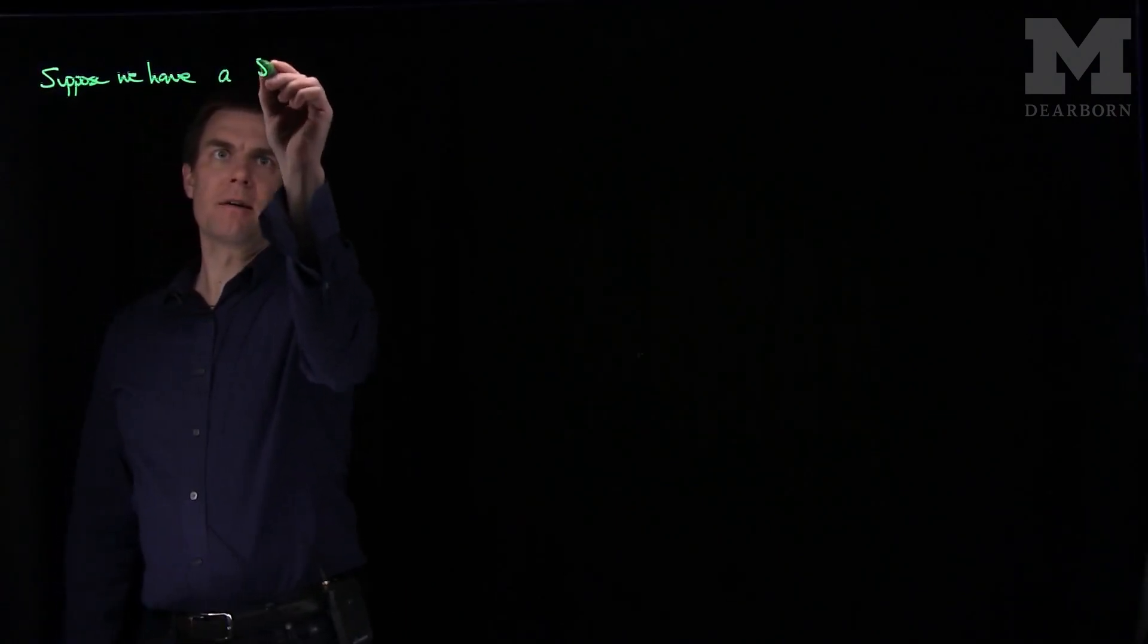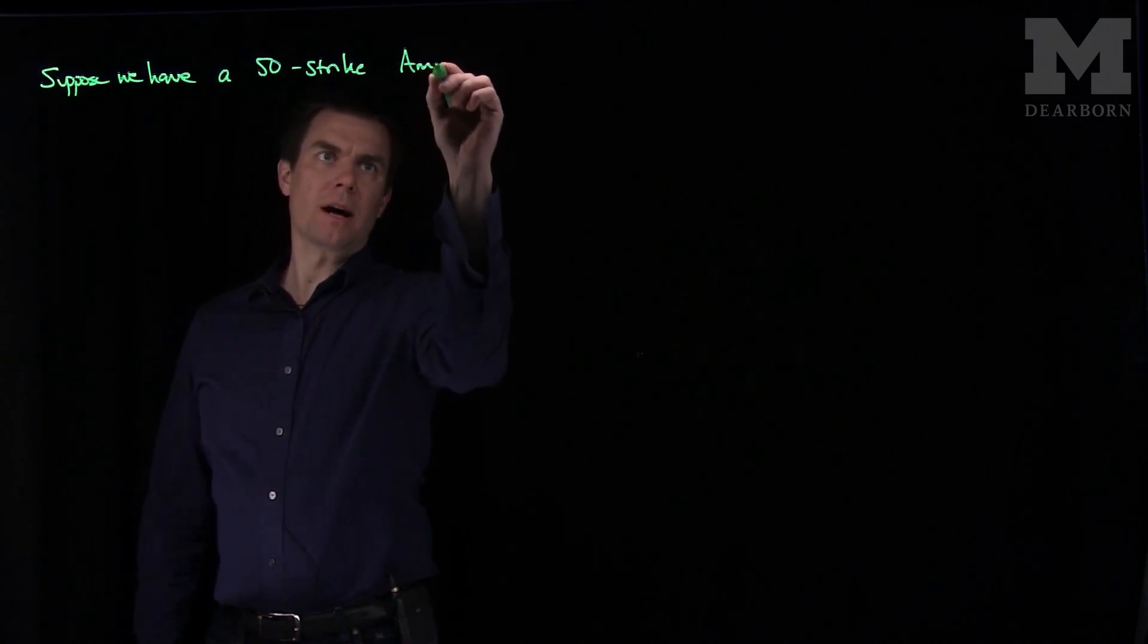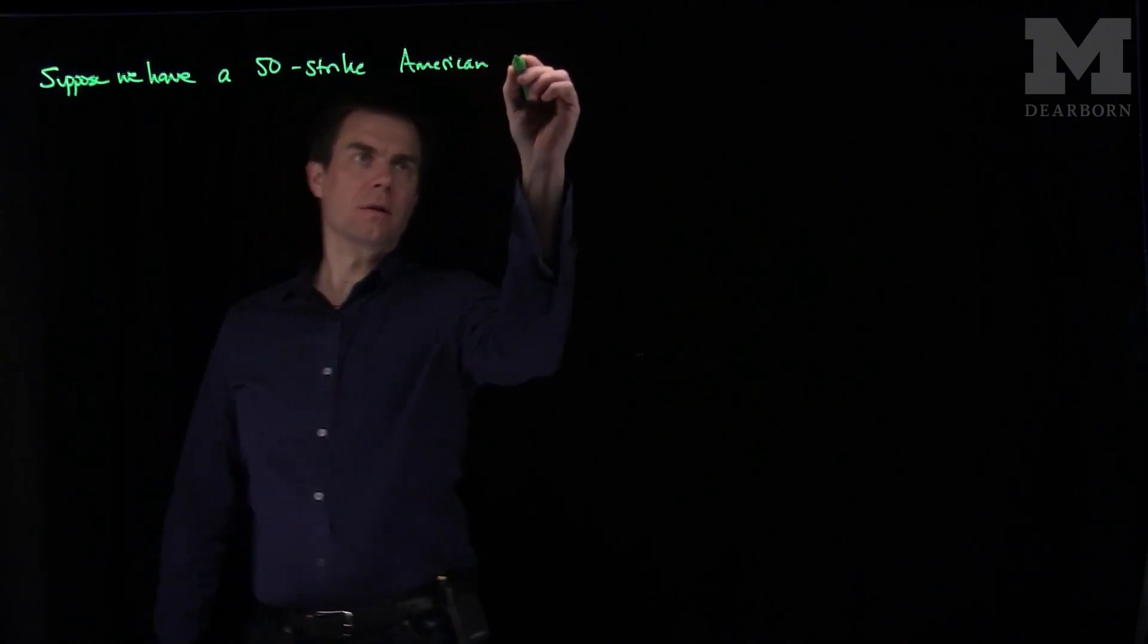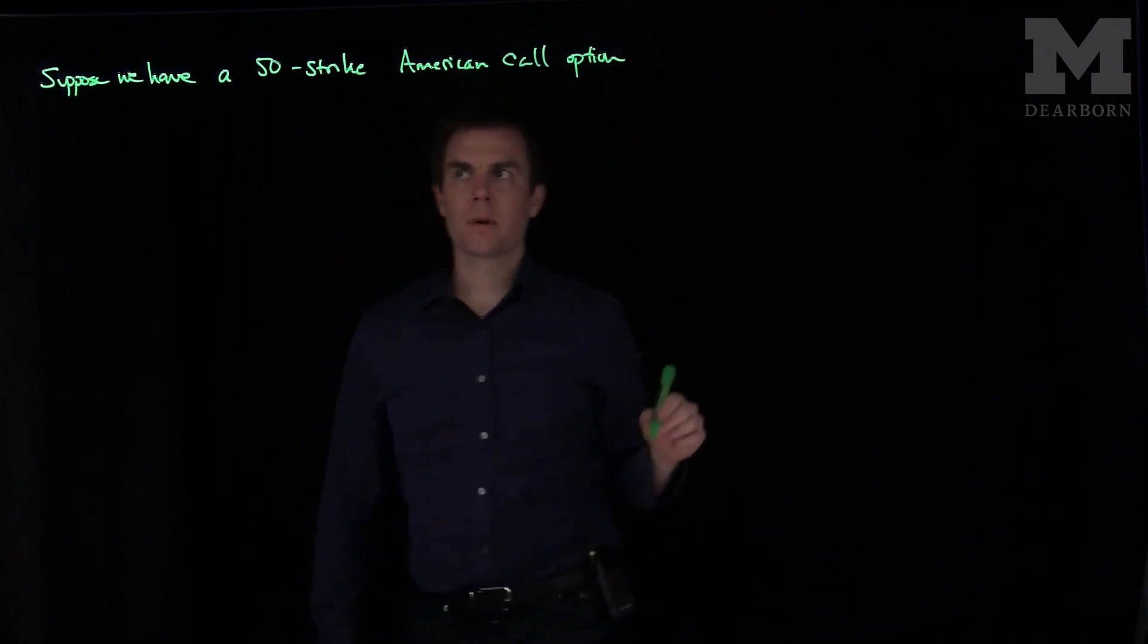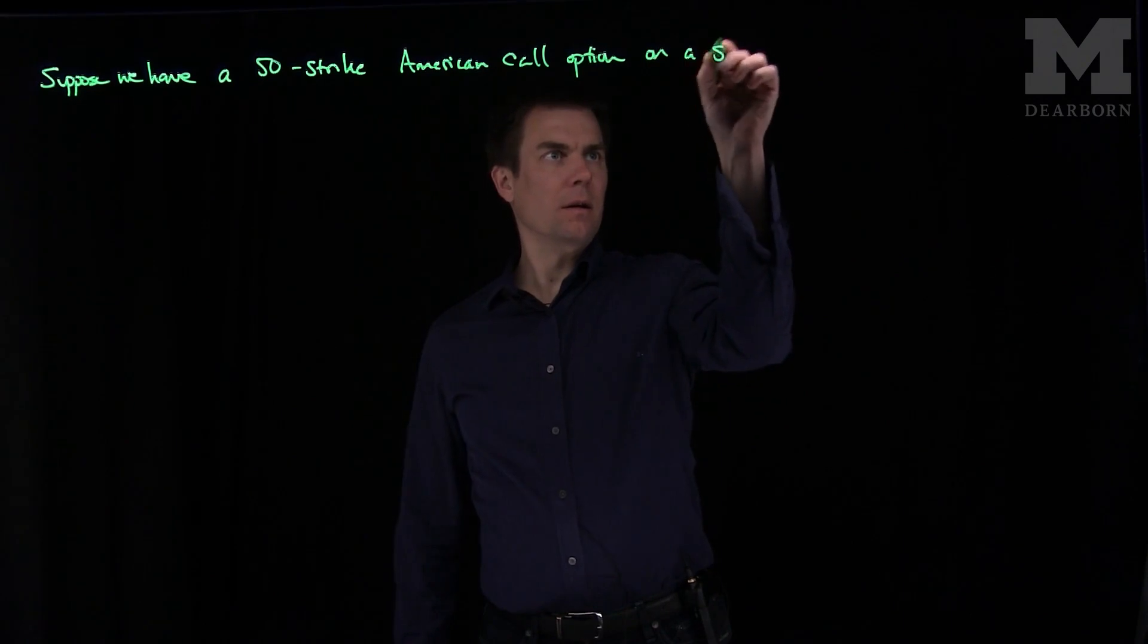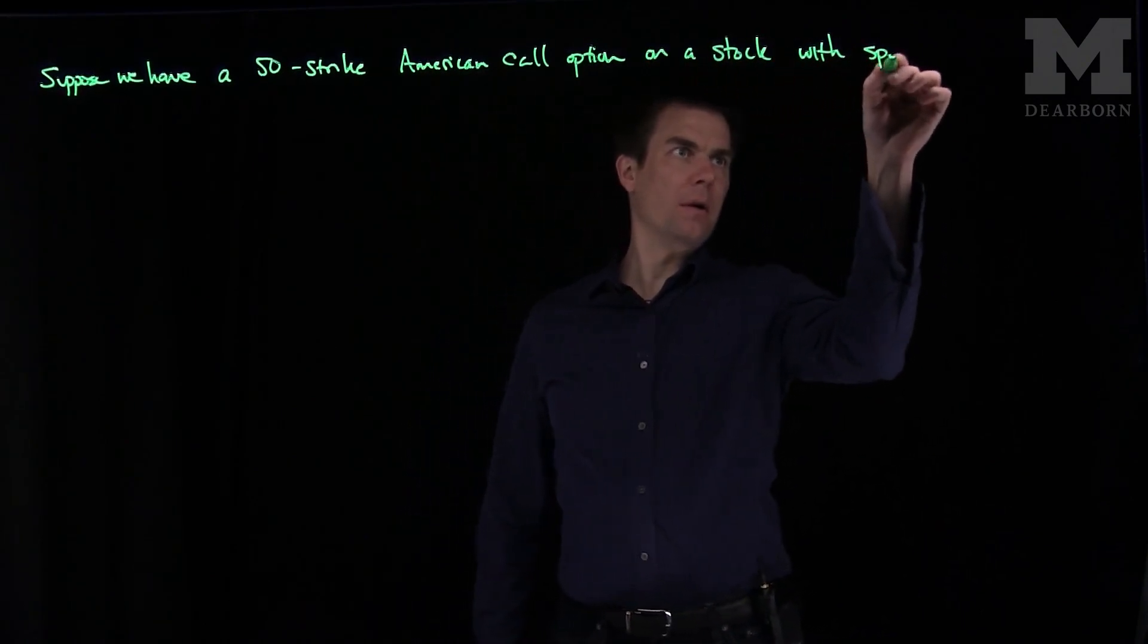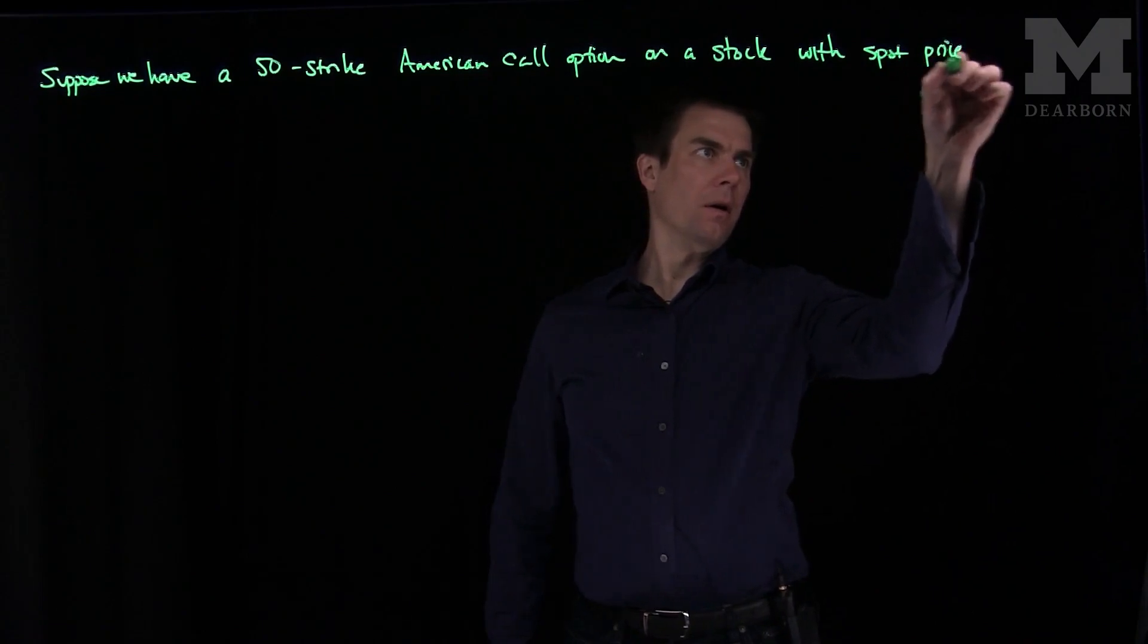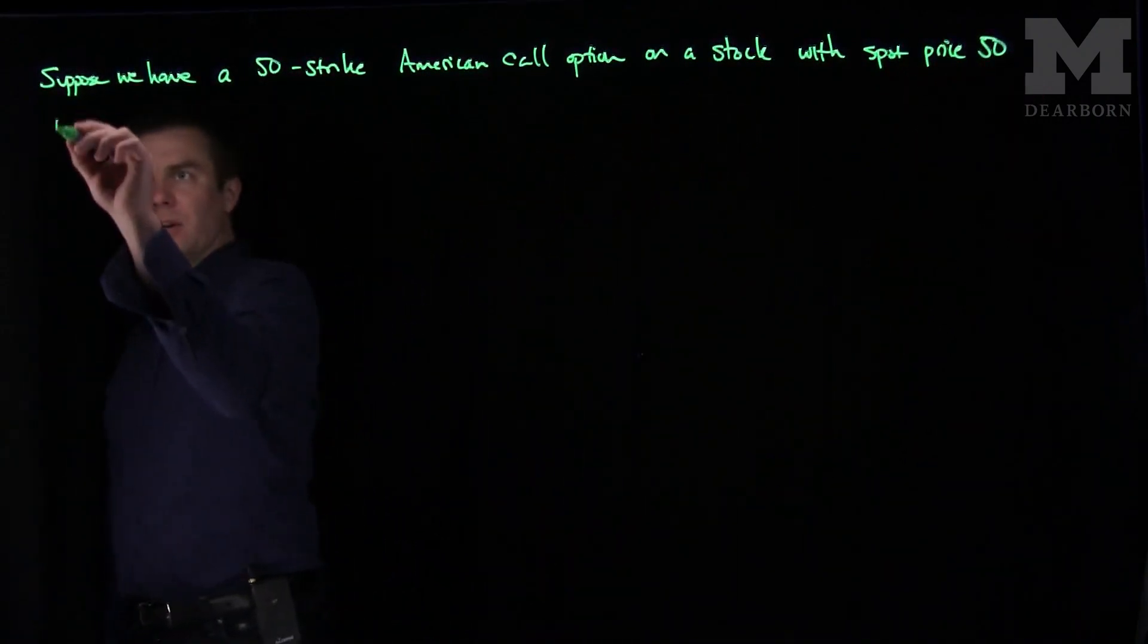Suppose we have a 50 strike American call option on an underlying asset with spot price 50 that follows a binomial tree.